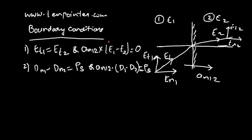Boundary conditions is an important topic for electrostatics, where you can expect a one or two mark question. It is one of the frequently asked topics in the GATE exam. So far, questions have appeared on Et1 = Et2 and Dn1 minus Dn2 = ρs, but in future you can also expect questions on the vector form of these boundary conditions.